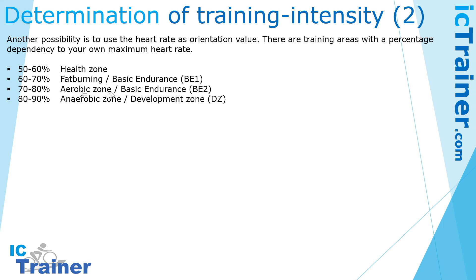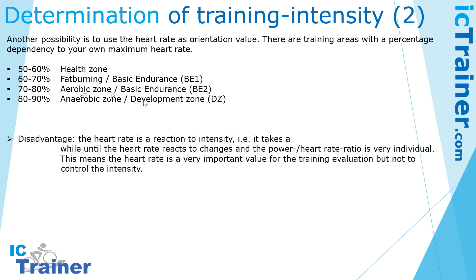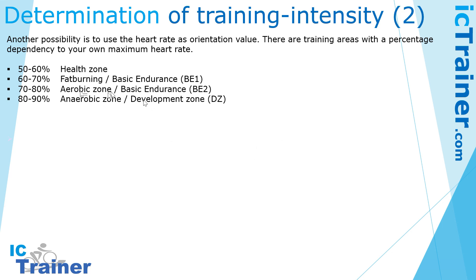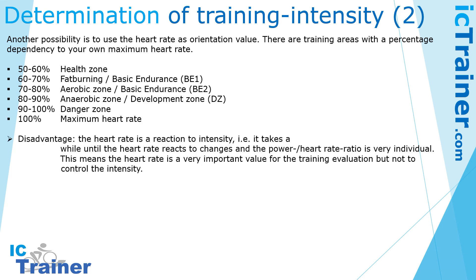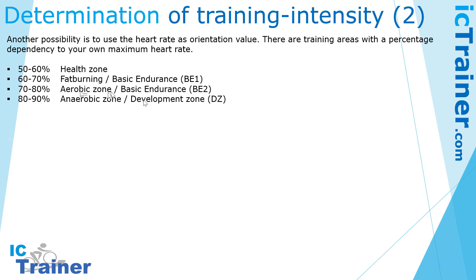The aerobic zone is a little bit tempo, and the anaerobic zone is much more tempo but you can't sustain it as long. Then there is a danger zone, only for very short intervals, and the maximum heart rate. However, the heart rate is only a reaction to intensity — it takes a while until the heart rate reacts after changes, and the power-to-heart-rate ratio is very individual. So heart rate is a very important value for training result evaluation, but not to control intensity.